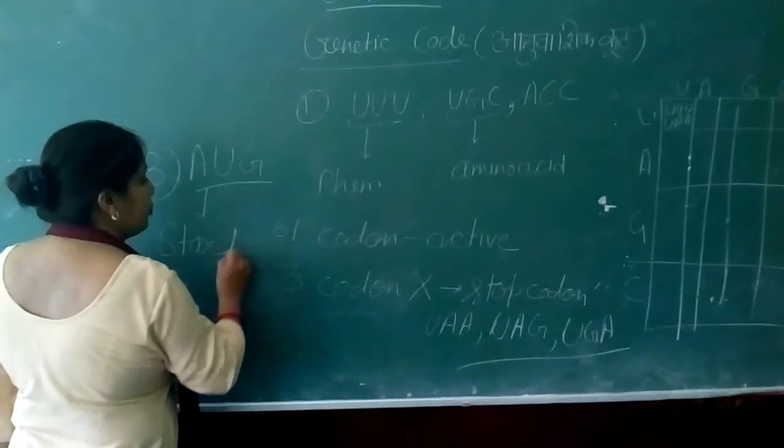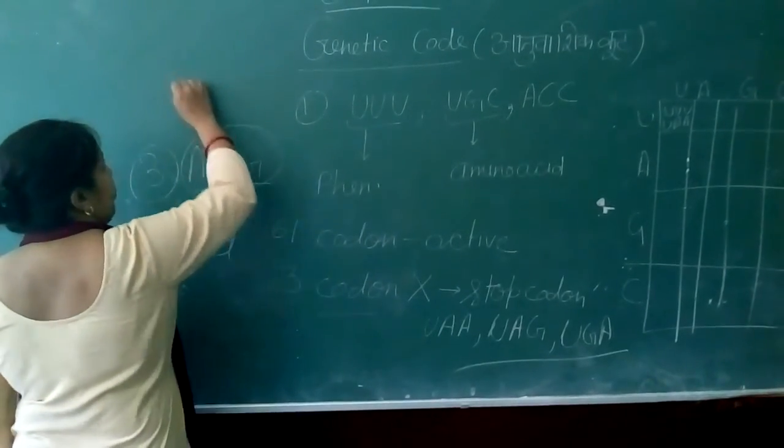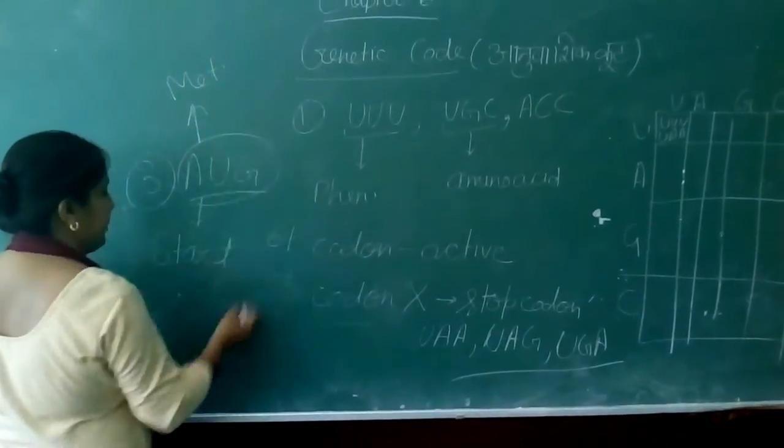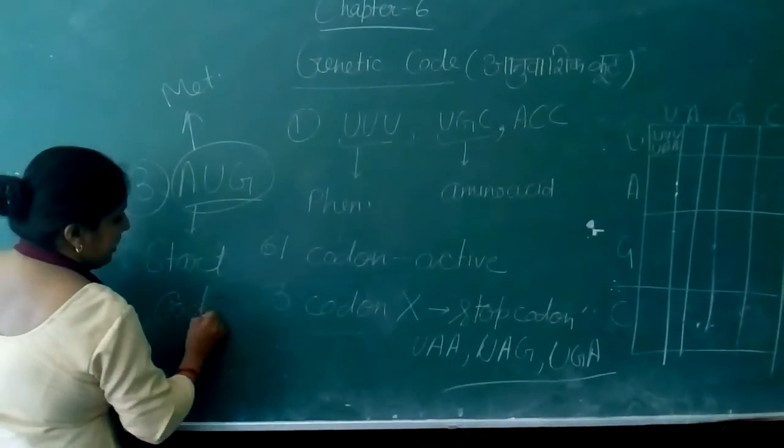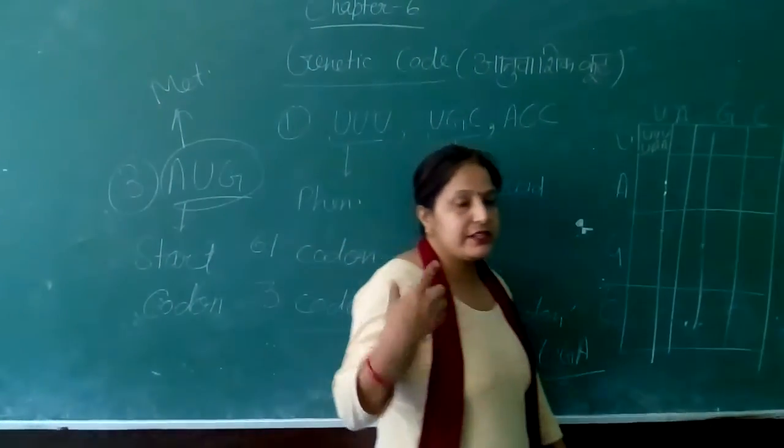AUG has a double function. It codes for the amino acid methionine and serves as the start codon for protein synthesis.